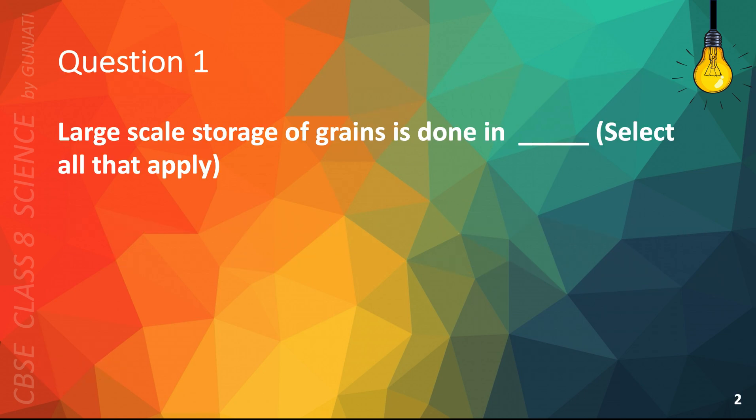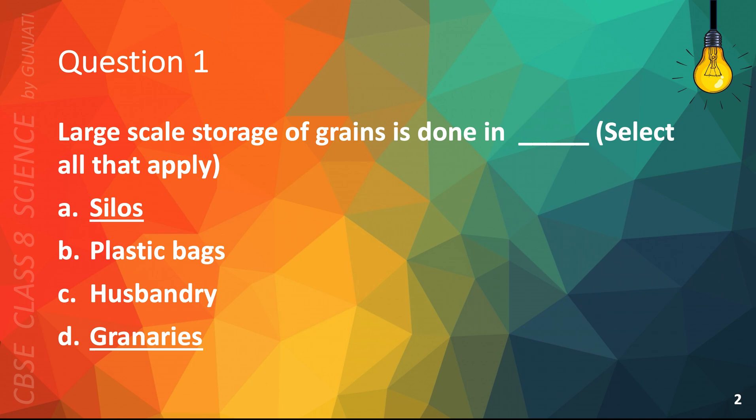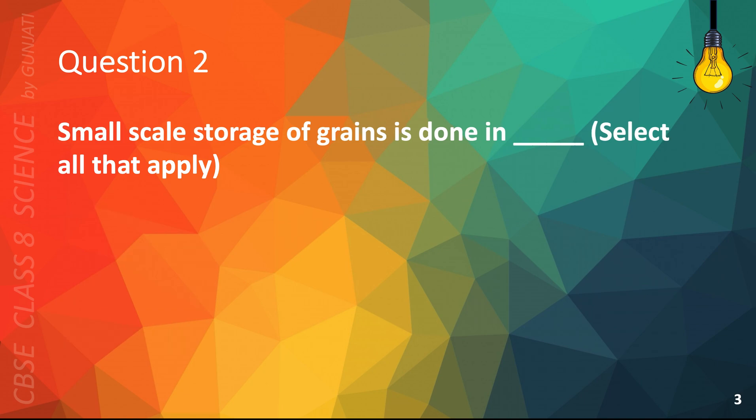Question 1. Large-scale storage of grains is done in... Select all that apply. A. Silos, B. Plastic bags, C. Husbandry, D. Granaries. The correct answer is A. Silos, D. Granaries.